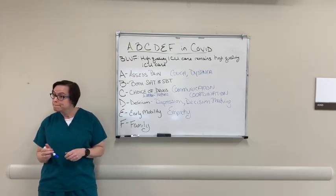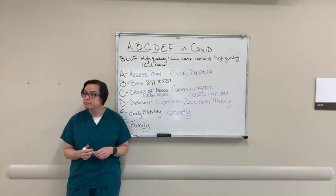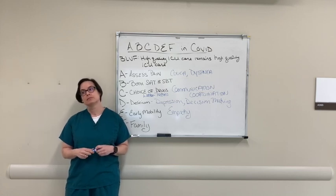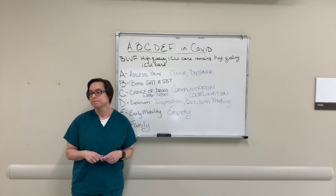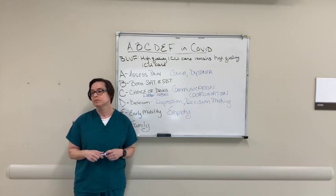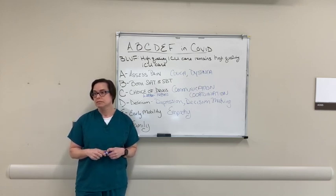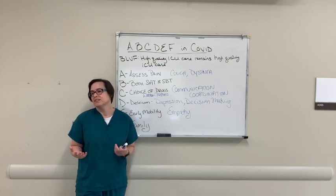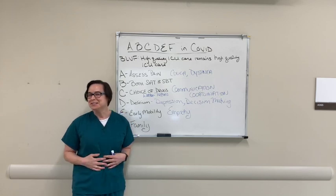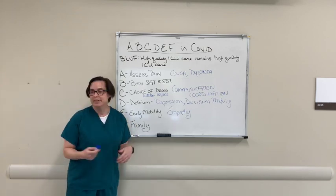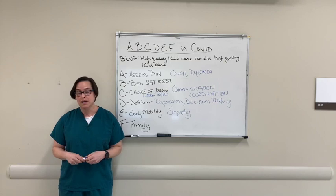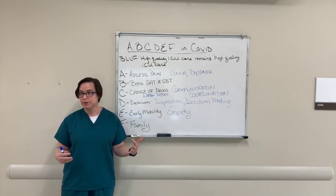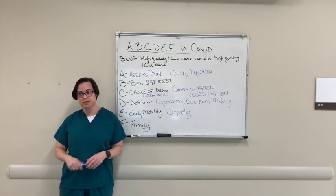Another important intervention is encouraging patients to auto-prone before they get too sick to do it. Early on, when they have a mild oxygen requirement, lying flat on their stomach improves oxygenation. We like to call it 'adult tummy time.' Proning as much as we can get people to do ahead of time helps prevent progression of disease.